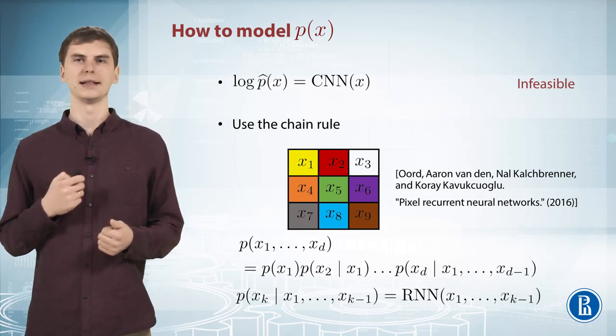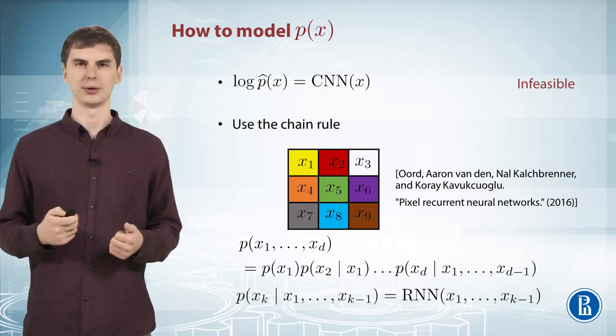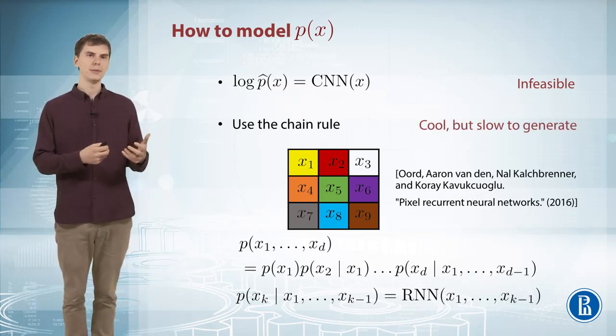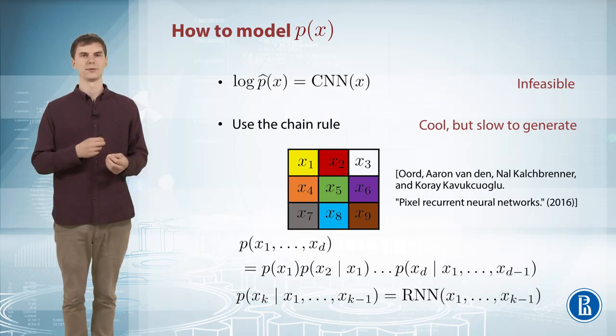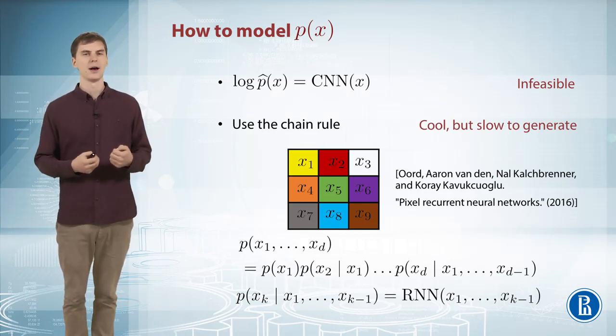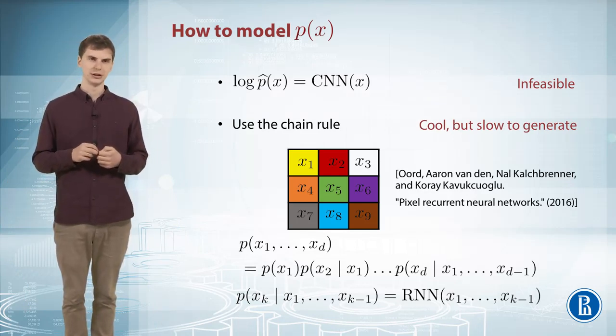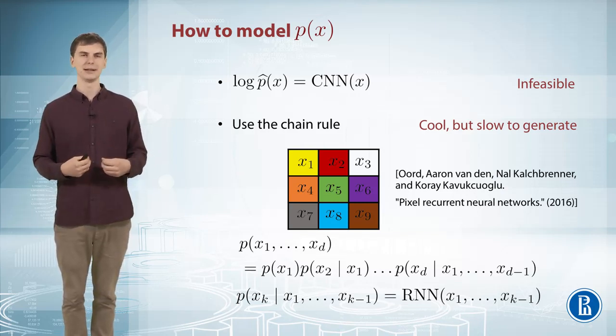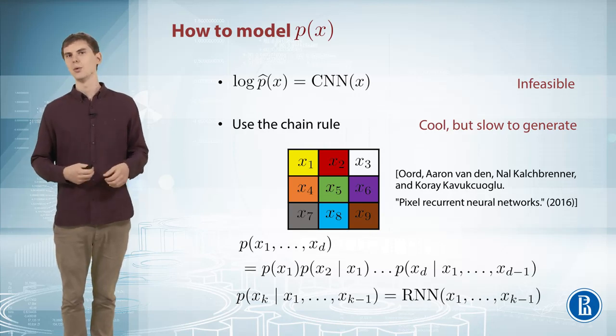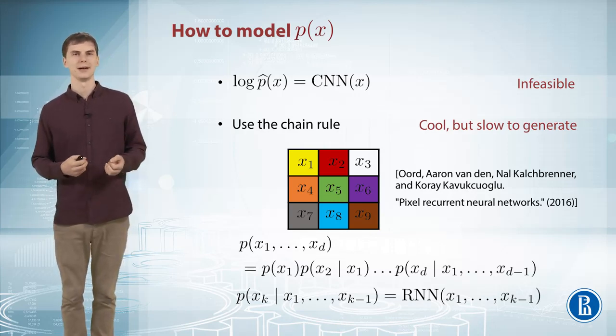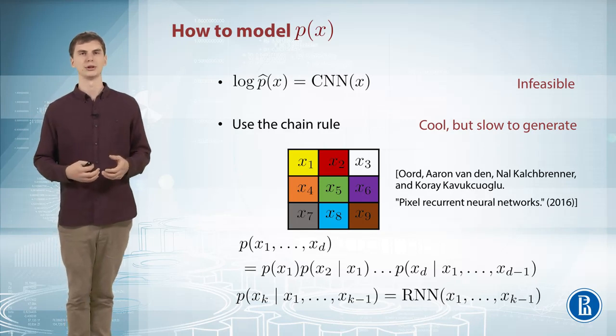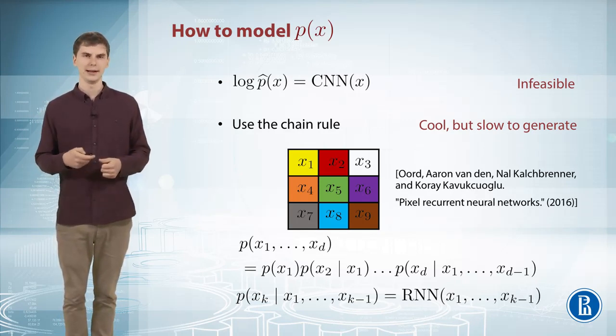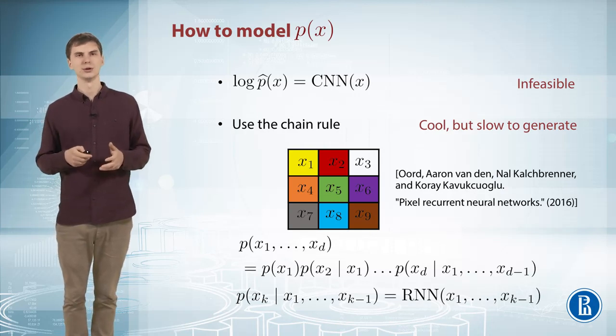But some downside is you have to generate your new images one pixel at a time. So if you want to generate a new image, you have to first generate x1 from the marginal distribution x1, then feed this just generated x1 into the RNN. It will output your distribution on the next pixel, and so on. No matter how many computers you have, generating one high resolution image can take minutes, which is really long. So we may want to look at something else.